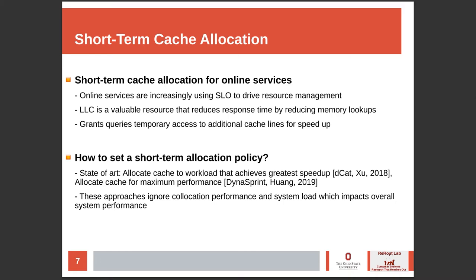But how should we set the short-term allocation policy for a workload? DCAT is a prior work that allocates additional shared cache lines to the workload that achieves the greatest speedup via throughput profiling, but the amount of cache does not change for the other co-located workloads. Dynasprint allocates additional shared cache lines for maximum performance; however, the policies found under low arrival rate are reused under high arrival rate, ignoring the effects of queueing delay.